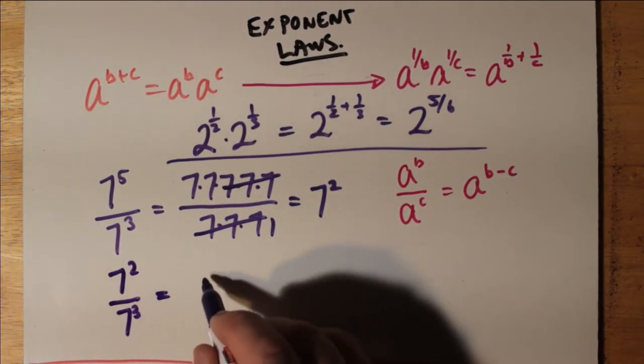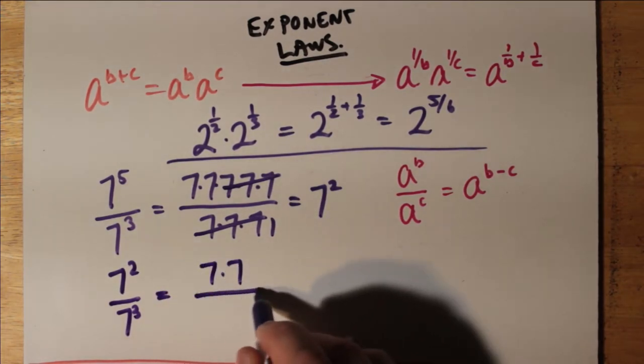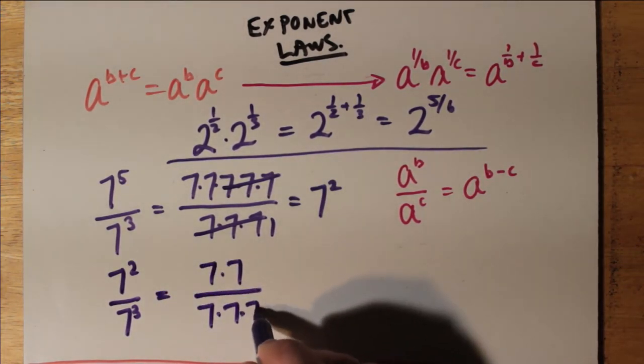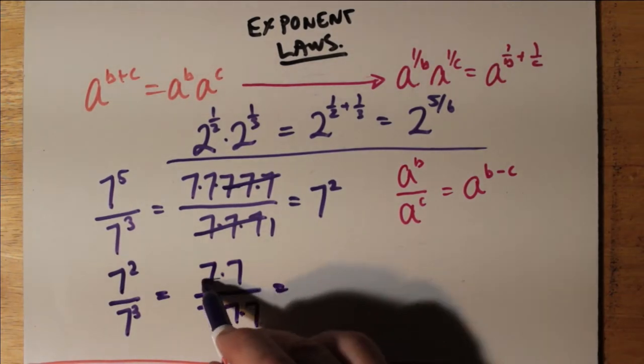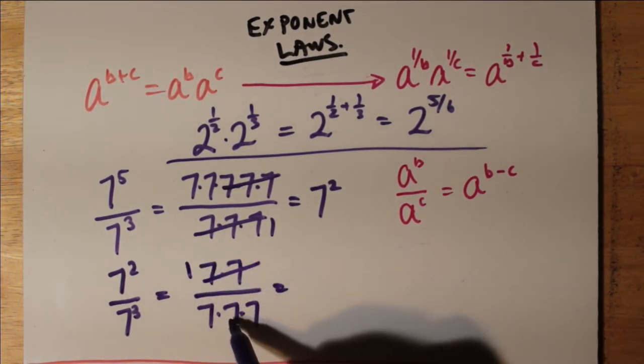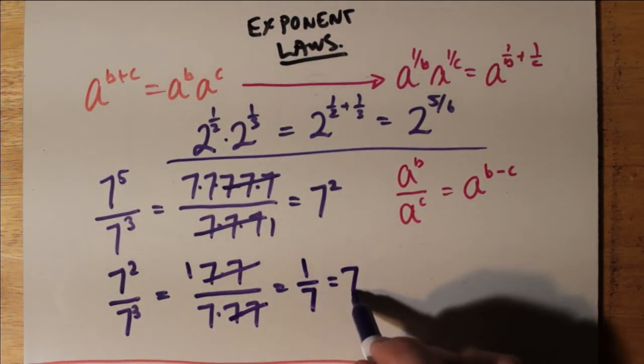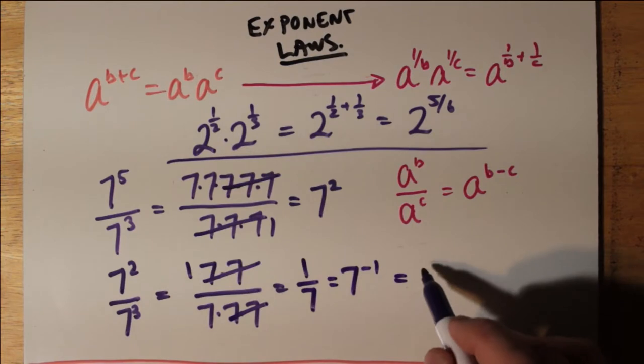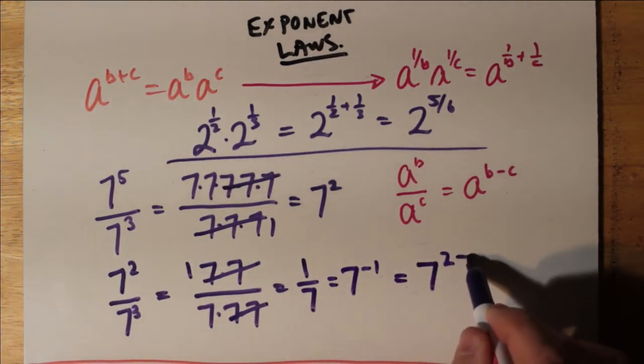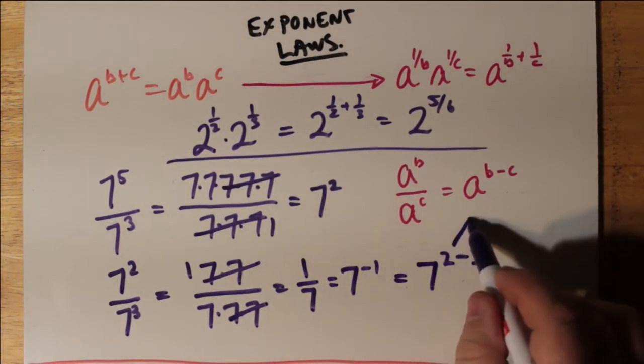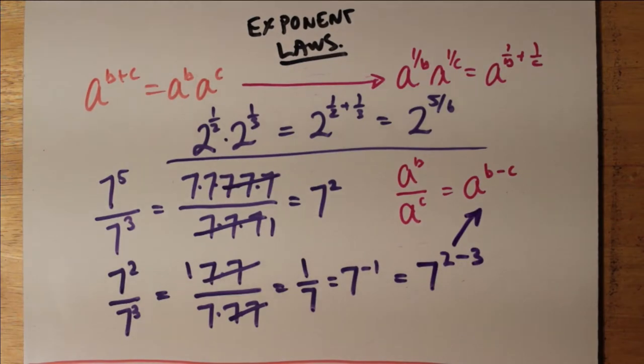7 squared divided by 7 cubed. Notice, now the exponent on the denominator is bigger. We end up with 1 over 7 because 7 times 7 cancels, or 7 to the power of minus 1. That's 7 to the 2 minus 3. So we end up with a negative exponent. And that fits our formula that we had earlier, that a to the b over a to the c is a to the b minus c.